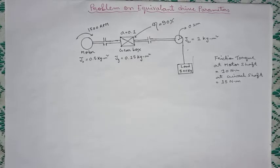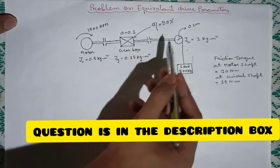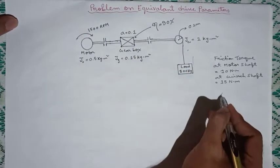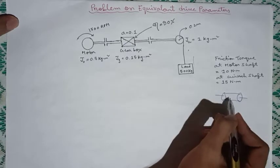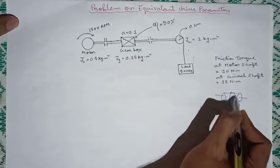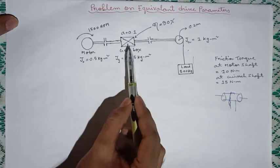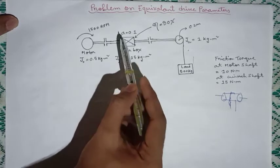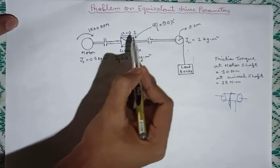Now let us see the problem. We have a motor which is driving a wind drum. We can wind the cable here like this. Between the wind drum and the motor, there is a gearbox with tooth ratio of 0.1. This I have explained in my previous video.